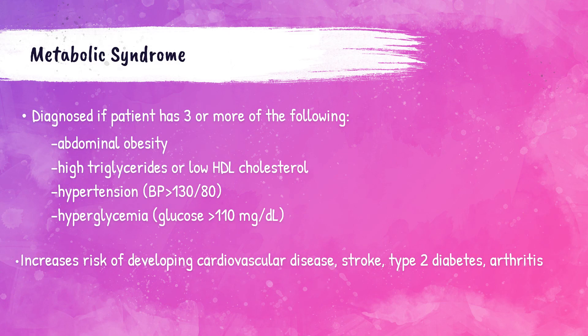Metabolic syndrome refers to various risk factors that lead to an increased risk of developing cardiovascular disease. It is diagnosed in patients with three or more of the following: abdominal obesity, high triglycerides or low HDL cholesterol, hypertension, and hyperglycemia. In addition to cardiovascular disease risk, patients with metabolic syndrome also have an increased risk of arthritis, stroke, and type 2 diabetes mellitus.